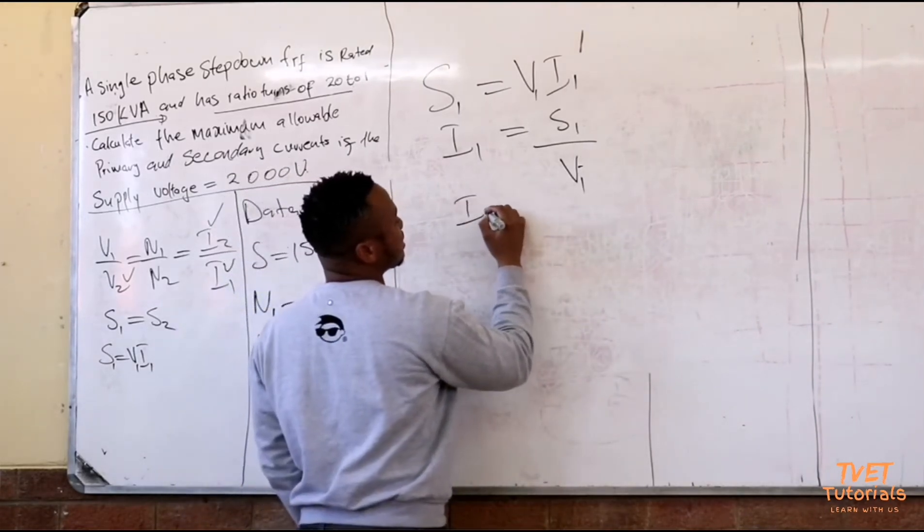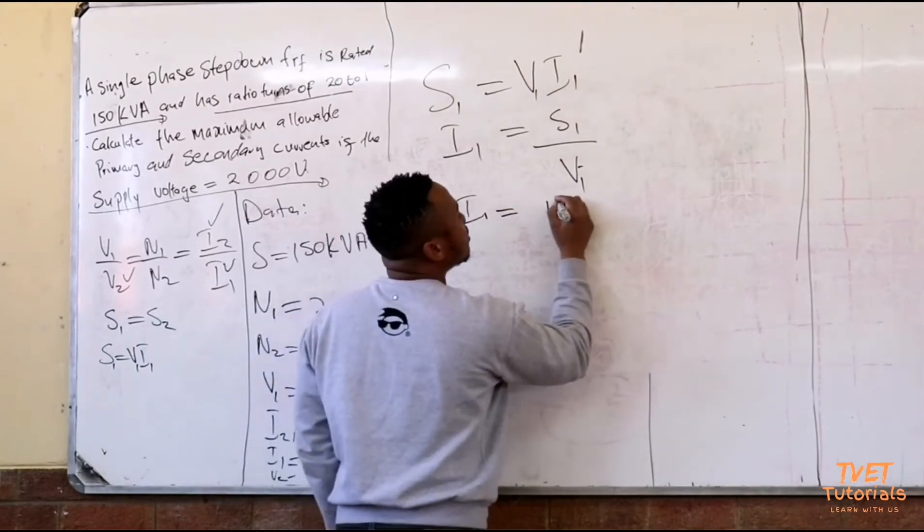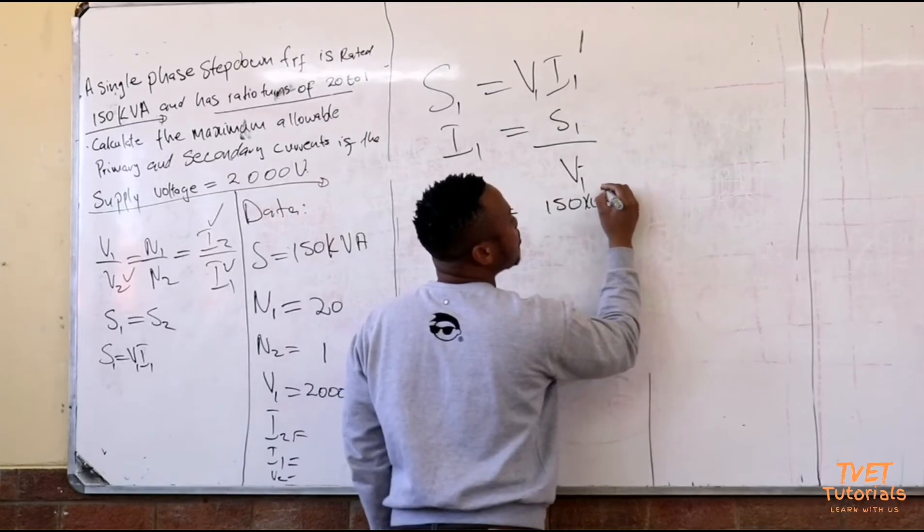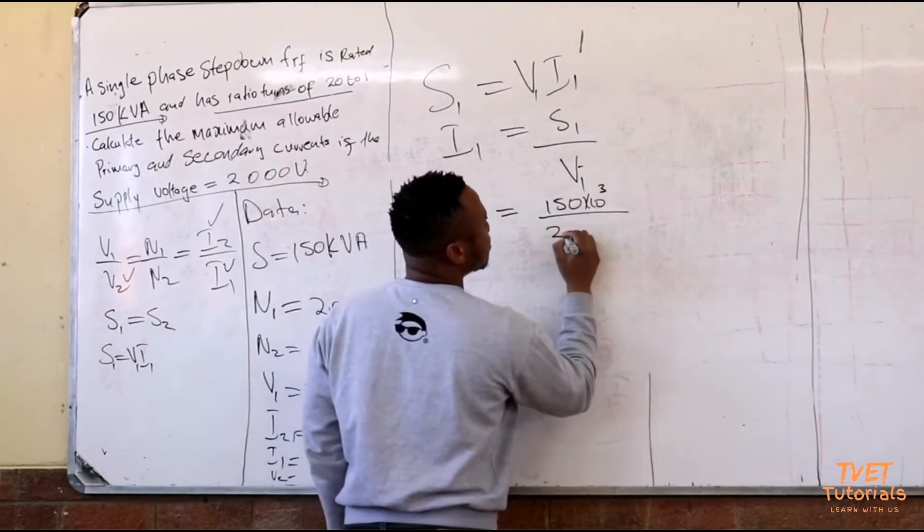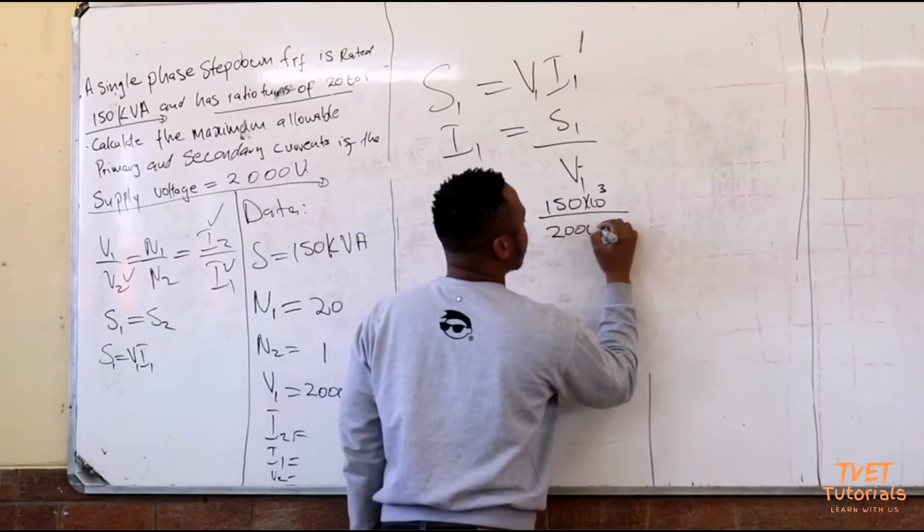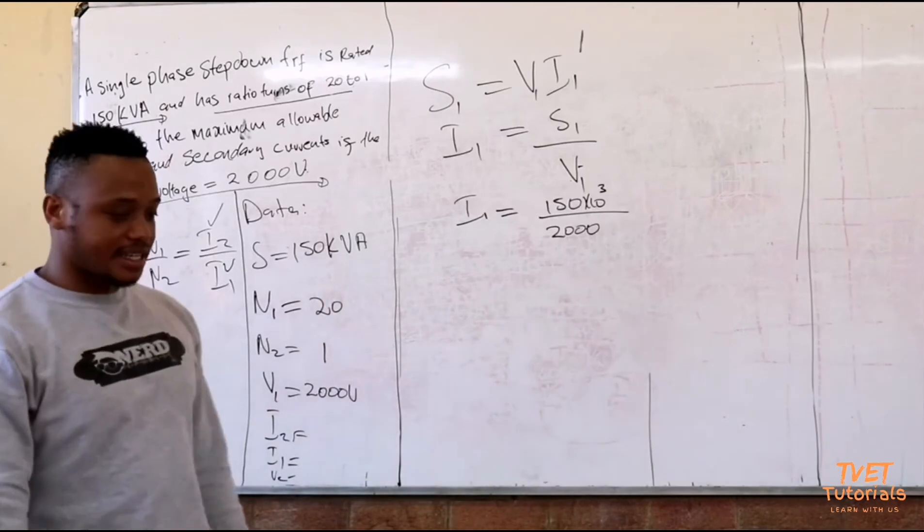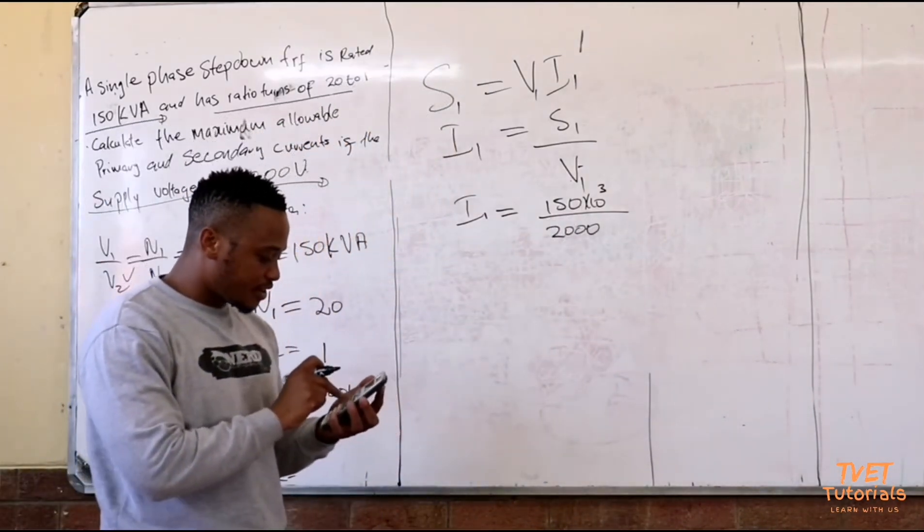So that means that my primary side current i1 is equal to 150k times 10 to the power 3 divided by 2000 volts on the primary. These values I am getting from my collected data. Then you take your calculator and punch in those values.